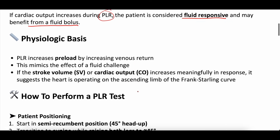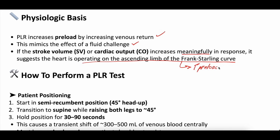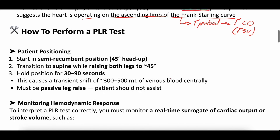The physiologic basis: the passive leg raise increases preload by increasing venous return, mimicking a fluid challenge without giving any excess fluid. If the stroke volume or cardiac output meaningfully increases in response, it suggests the heart is operating on the ascending limb of the Frank-Starling curve — where that heart with more preload will increase cardiac output through an increase in stroke volume.